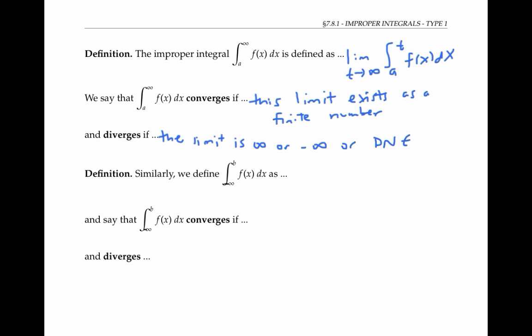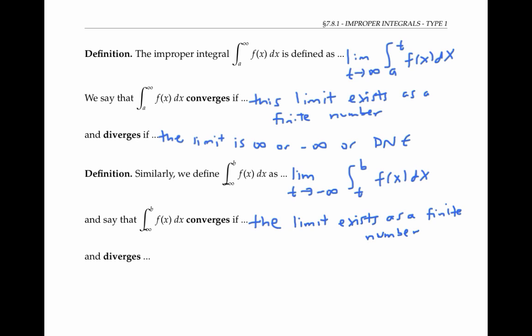Similarly, we evaluate the integral from negative infinity to some finite number by taking bigger and bigger intervals that extend off to negative infinity. That is, this integral is defined as the limit as the left endpoint t goes to negative infinity of the integral from t to a of f of x dx. We say that this integral converges if the limit exists as a finite number, and diverges otherwise.